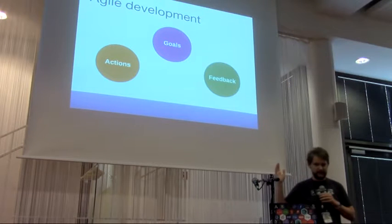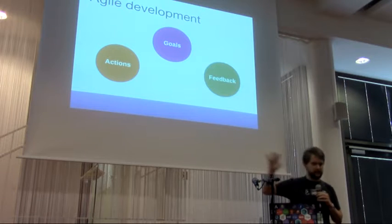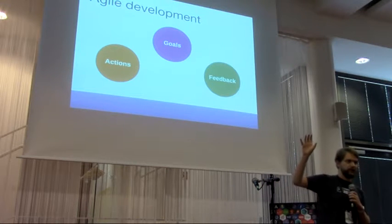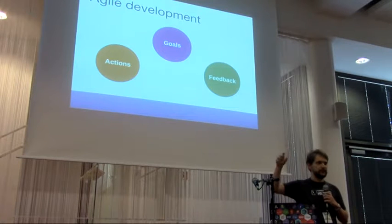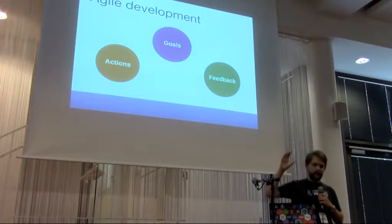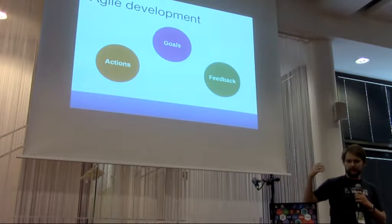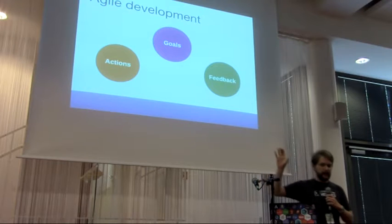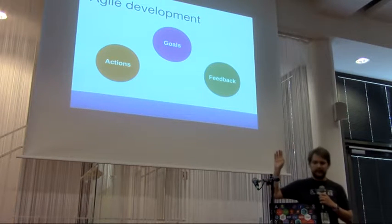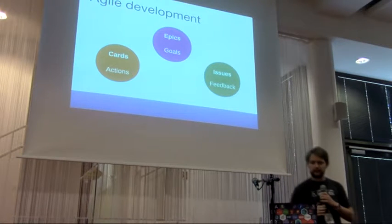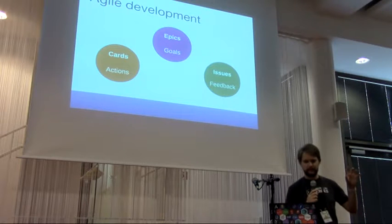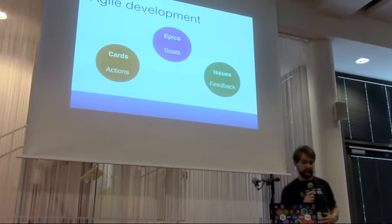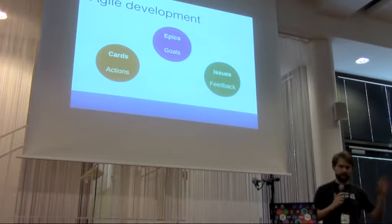Those three things are: goals, actions, and feedback. Goals are things you want to produce — the end result. For example, in documentation we have things like translation, build pipeline, and information architecture. Actions are units of work to get to those goals — things like pushing a change or writing a script. Feedback comes from your users. In agile terminology, goals are called epics, actions are cards or issues, and feedback is what you get from user issues.